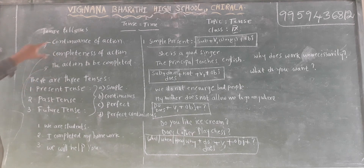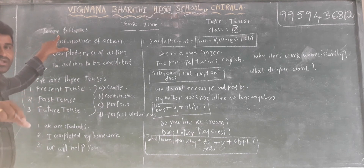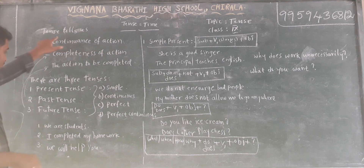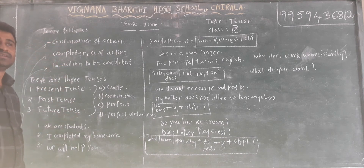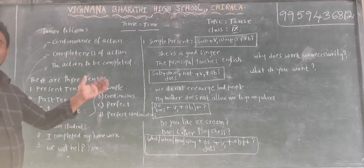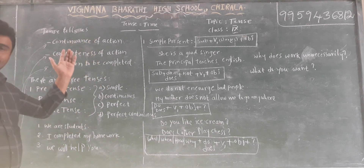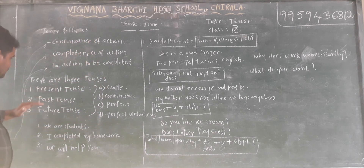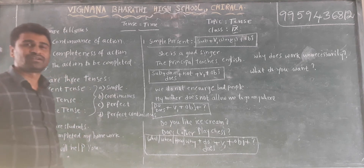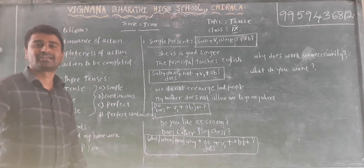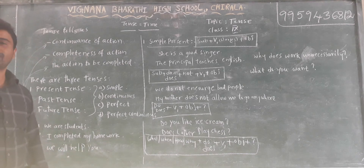So present tense tells about the continuous of action — the action which is going on now. Past tense tells about the completeness of action which had already taken place earlier: last year, last month, long back. And future tense tells about the action to be completed in the future — it has not taken place yet and it will take place in the future.